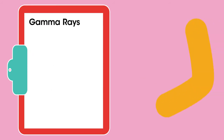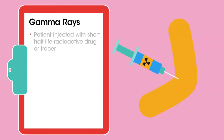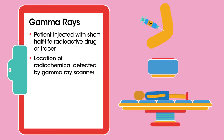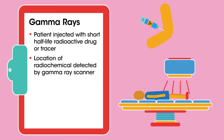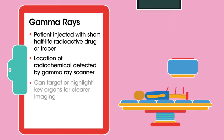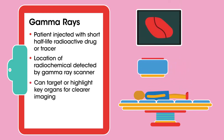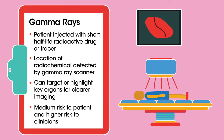Gamma rays. This technique uses short half-life radionuclides which are injected into the body and then their location or distribution is detected by the emitted gamma rays and mapped by external equipment. This can build up a 3D image of internal organs. There is some risk to all concerned in this case.